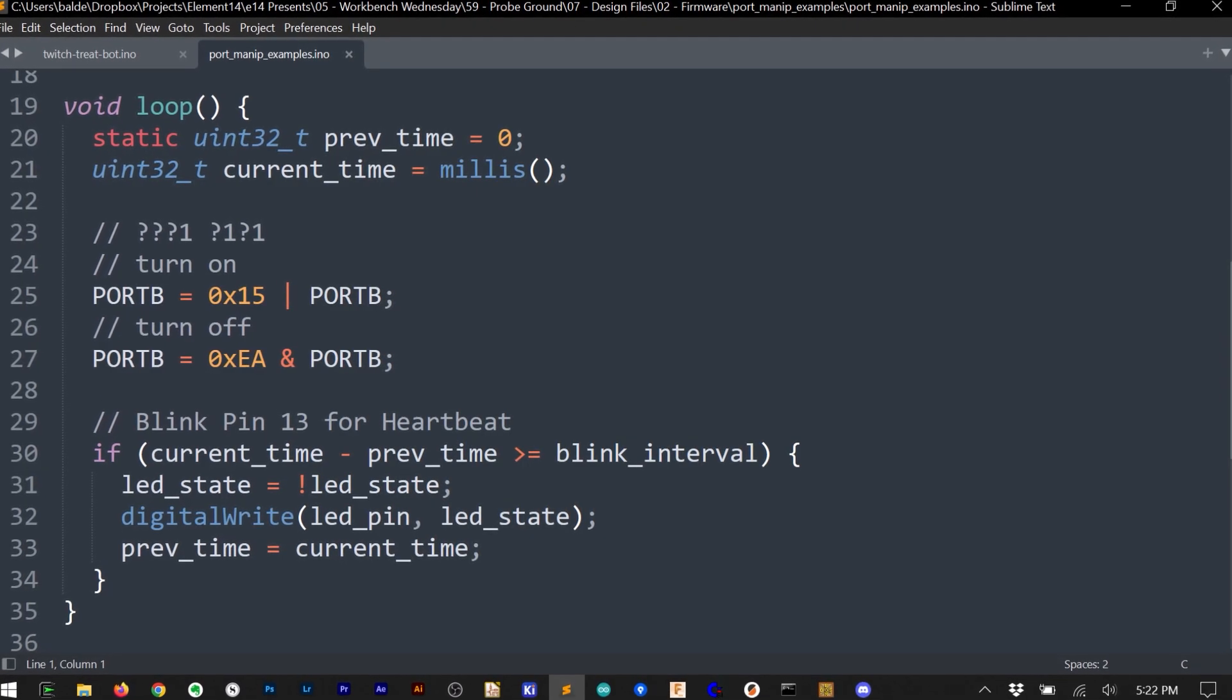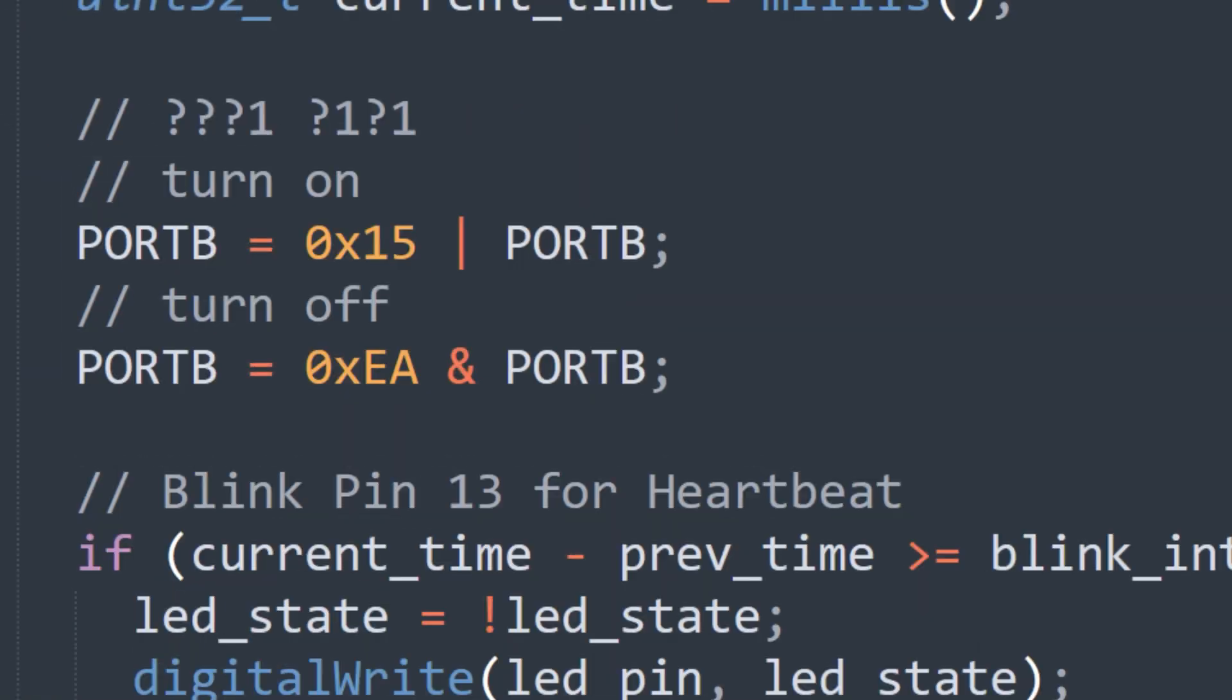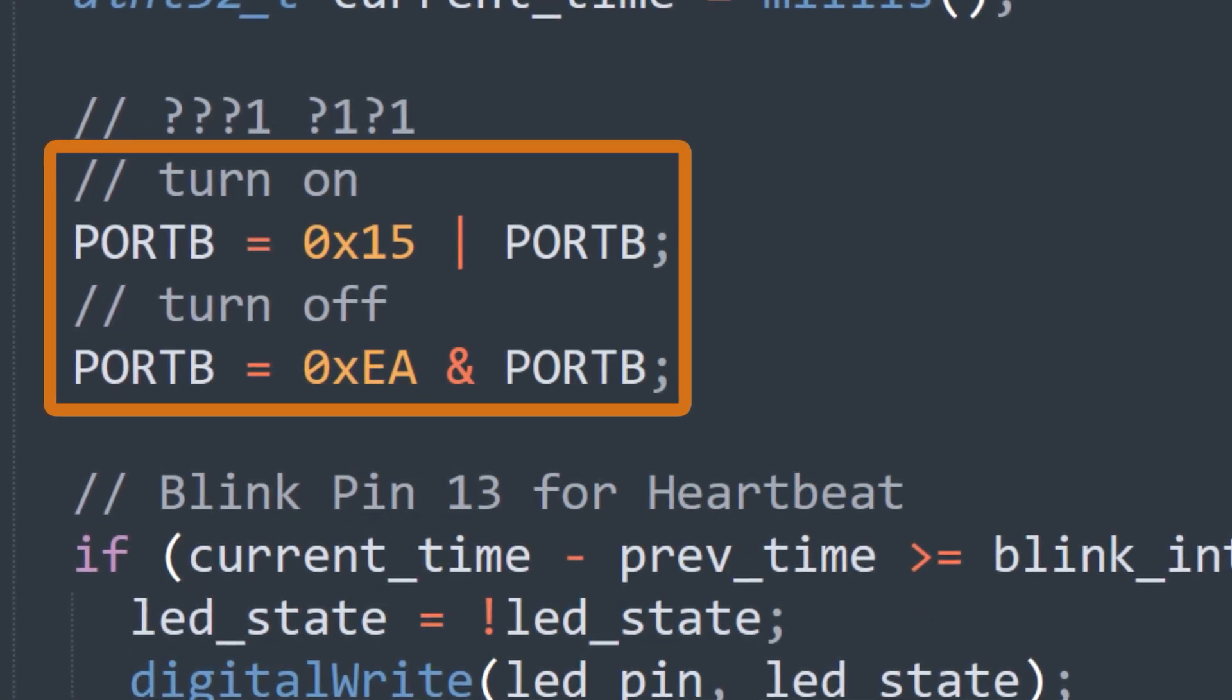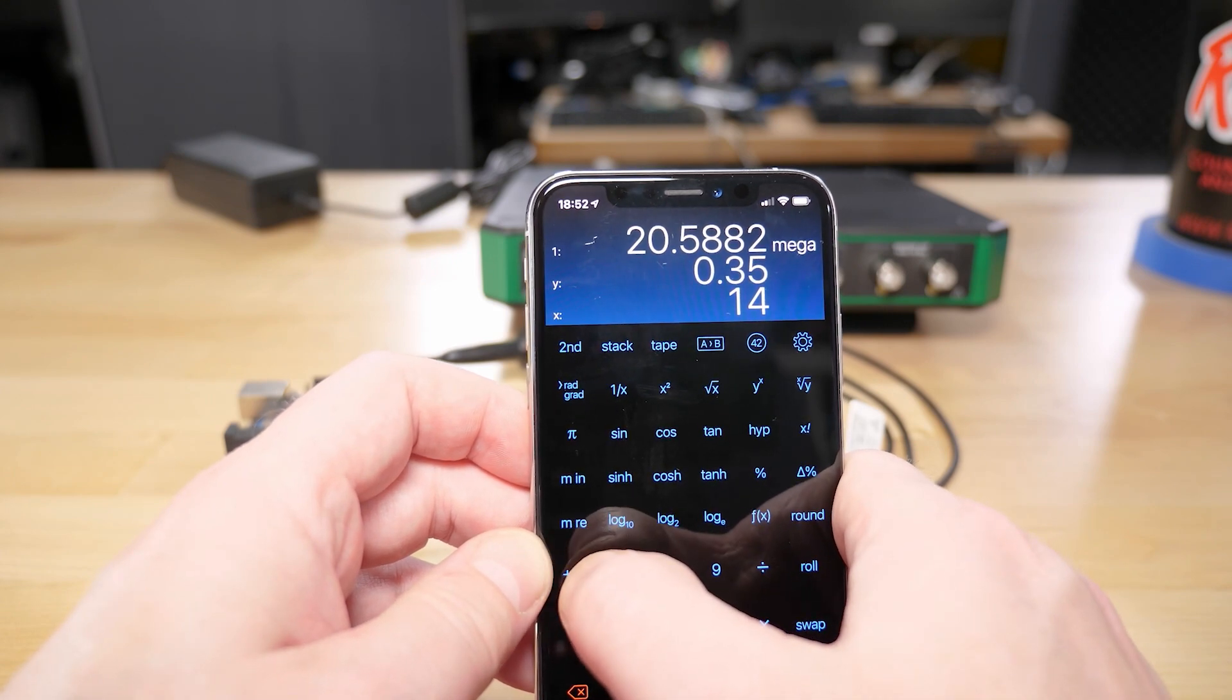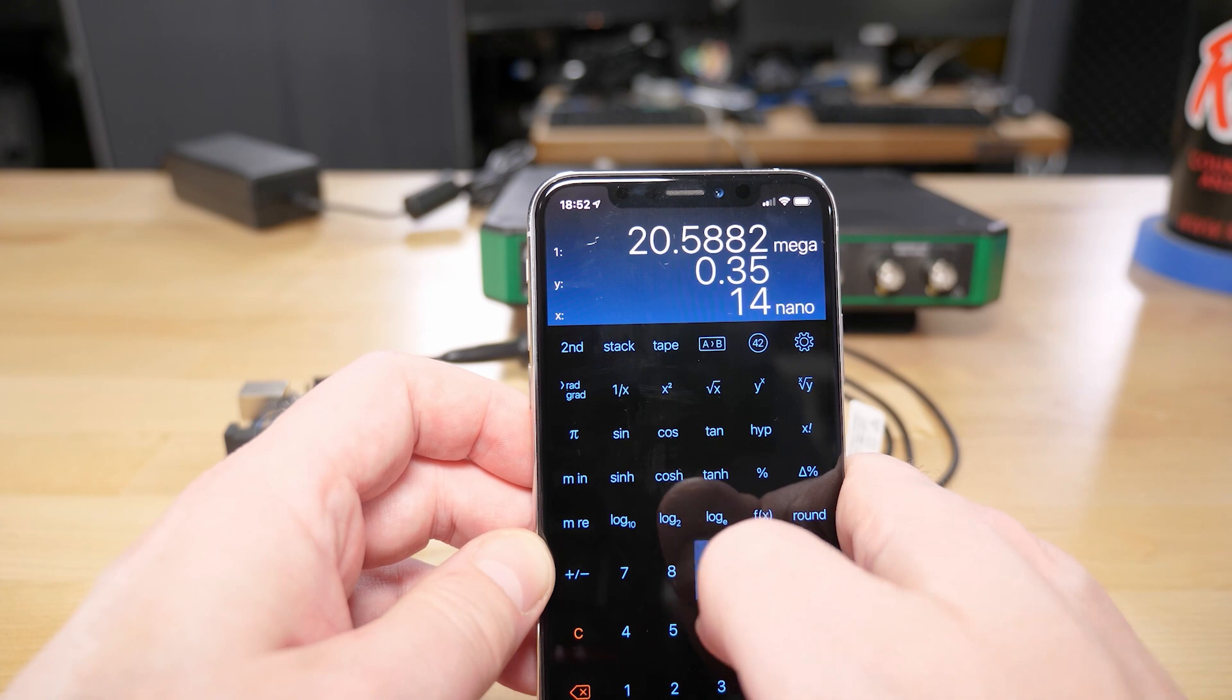FYI here is the Arduino code I used for these pulse measurements. I used direct pin access to toggle the pin very fast. However keep in mind as I have shown in other videos the edge of the signal has more frequency content than the repetition rate.